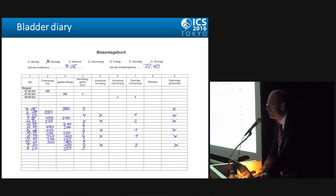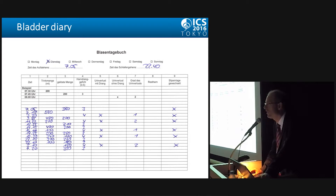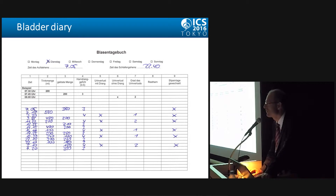The bladder diary is a very important tool, but unfortunately rarely used. It really reflects the daily life of your patient. It is so cheap — you can send it in advance of the consultation for the patient to complete at home and bring to your outpatient clinic. You immediately get an overview of what the patient is suffering from: is it nocturnal polyuria, is it polydipsia? There are many different issues you will not find out just by listening to the patient, but with a bladder diary it is so simple — just use it.